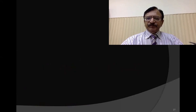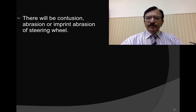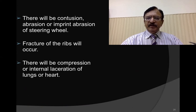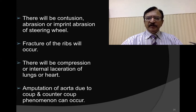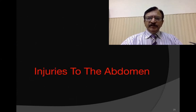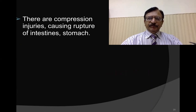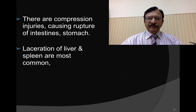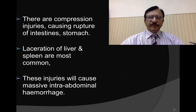Injuries to the chest include contusion, abrasion, and imprint abrasion of the steering wheel, and fracture of the ribs. Compression and internal laceration of the lungs and heart can occur from fractured ribs. Amputation of the aorta due to coup and contrecoup phenomena can also occur. Injuries to the abdomen are compression injuries — crushing and rupture of the intestine and stomach — with laceration of the liver and spleen being most common, causing massive intra-abdominal hemorrhage.